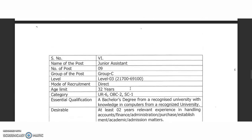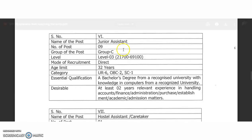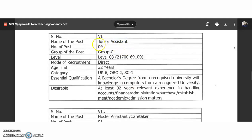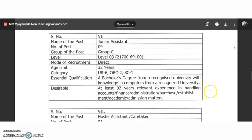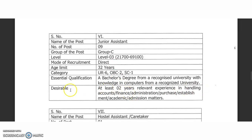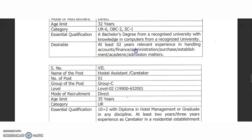For the Junior Assistant position — the main focus of this video — there are a total of nine vacancies under Group C, Level 3. The starting pay is 21,700 and goes up to 69,100 rupees per month. It is a direct recruitment basis. Age limit is 32 years, with relaxations available as per Government of India norms for OBC and SC categories. Only a bachelor's degree or any post-graduation is required. Basic computer knowledge is needed. Under desirable qualifications, at least two years of experience is preferred but is not essential — it will be an added advantage.